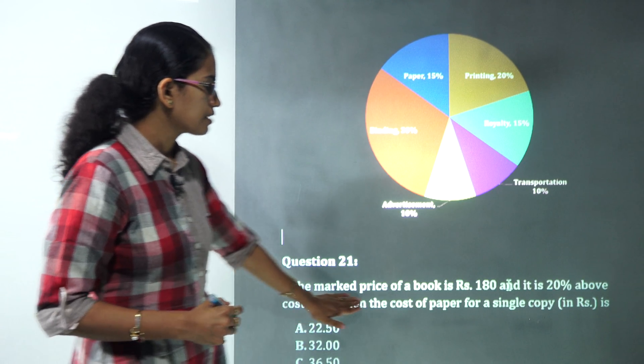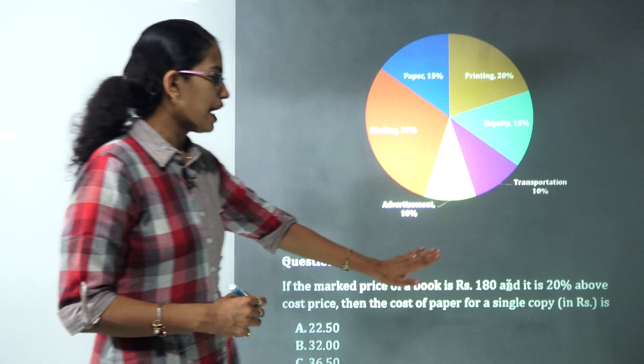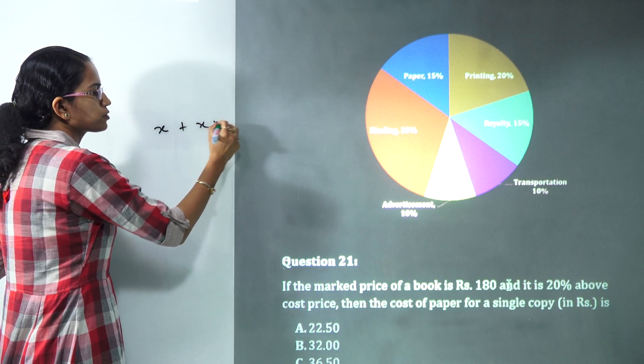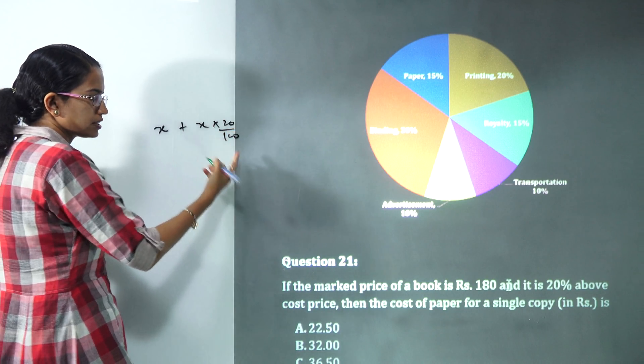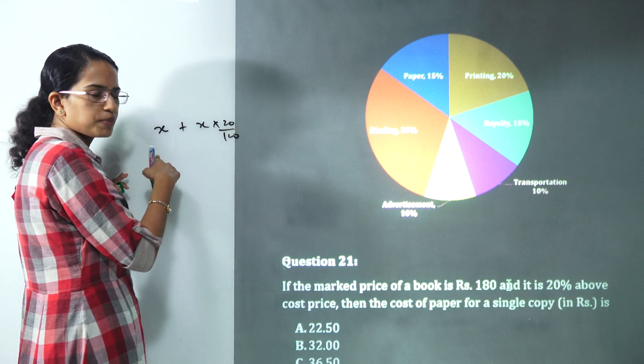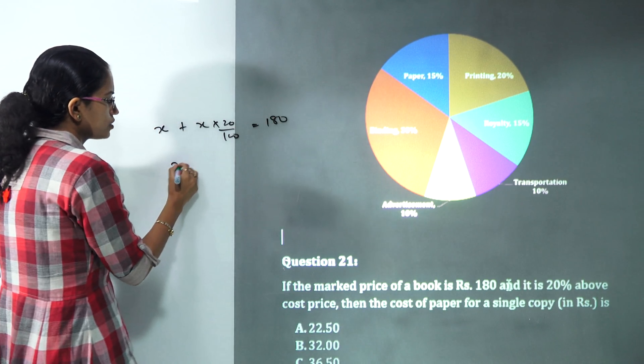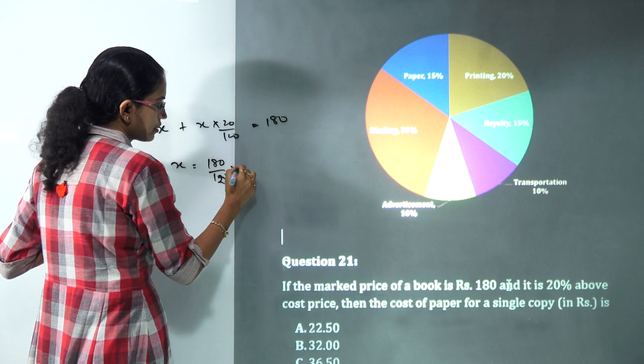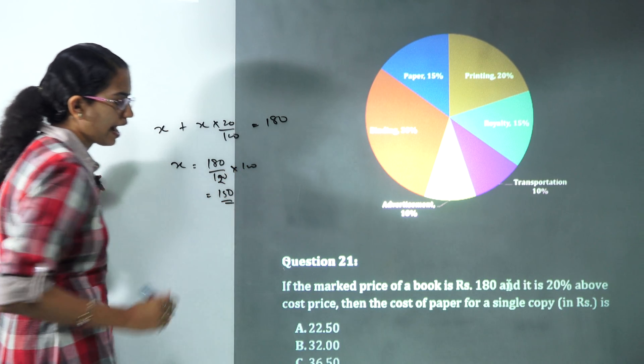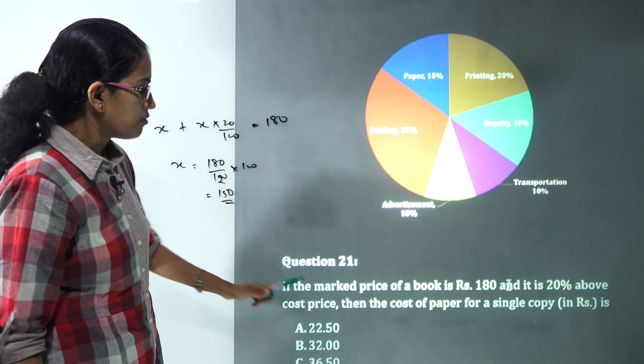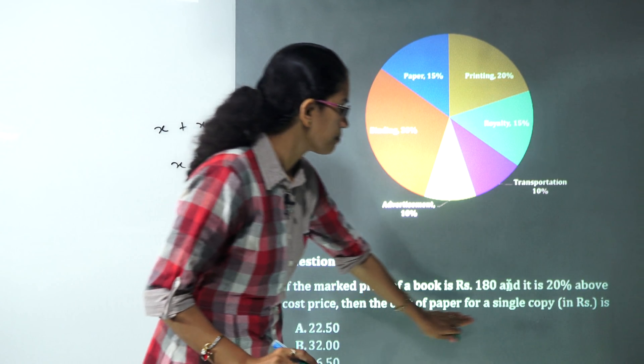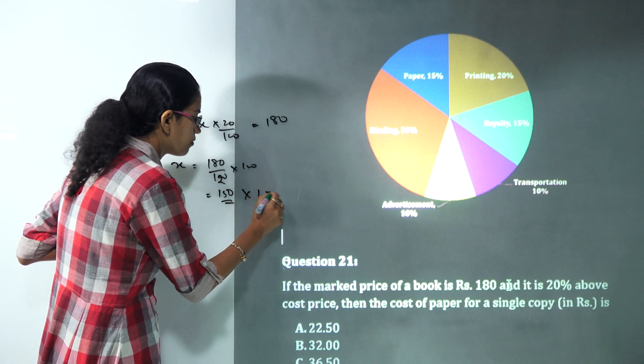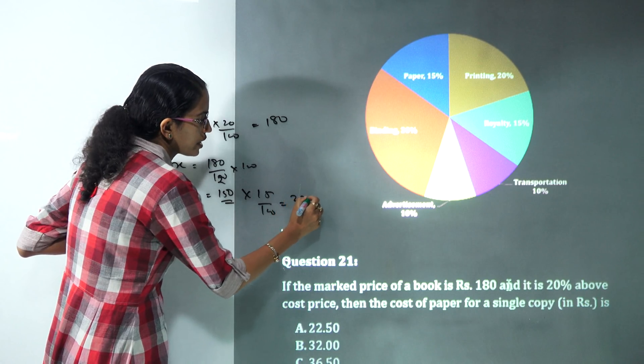The first question says if the marked price of the book is 180 and it is 20% above the cost price. Let the cost price be x. 20% above cost price would be x plus 20% of x which be equal to 180. I calculate x here which is equal to 180 by 120 into 100 and that would be 150. I have the value for the x. What I need to find is the cost of the paper for a single copy. The paper cost is 15%. So 15% of this 150 would be 22.5. The cost of the paper for a single copy would be 22.5.